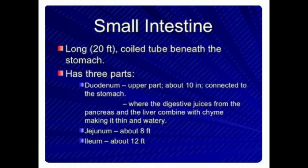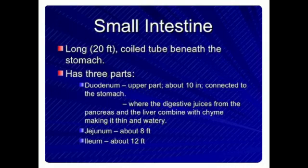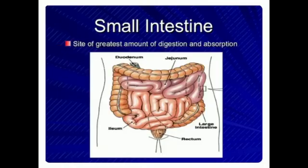The small intestines are a long coiled tube beneath the stomach and have three parts. First is the duodenum — the upper part, about 10 inches, connected to the stomach — where digestive juices from the pancreas and liver combine with chyme, making it thin and watery. Second is the jejunum, about 8 feet. Third is the ileum, about 12 feet.